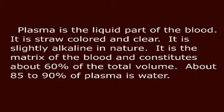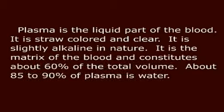Composition of Blood Plasma. Plasma is the liquid part of the blood. It is straw-colored and clear, and slightly alkaline in nature. It is the matrix of the blood and constitutes about 60% of the total volume. About 85 to 90% of plasma is water.